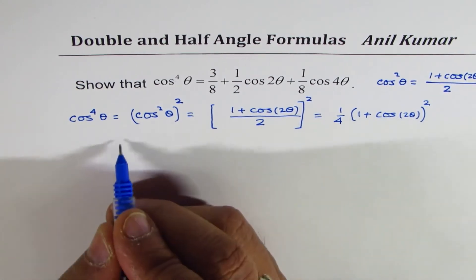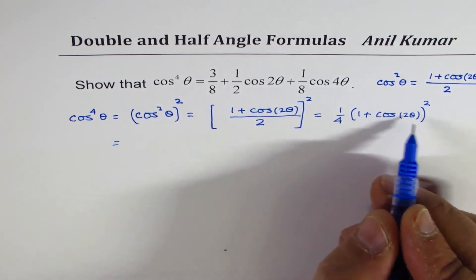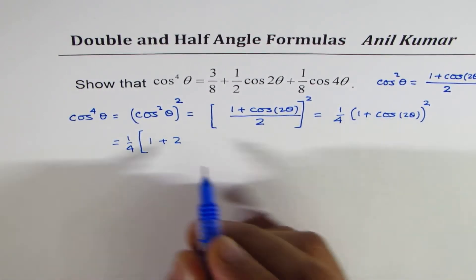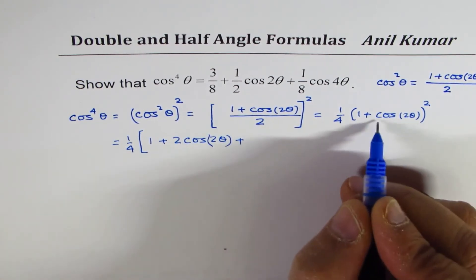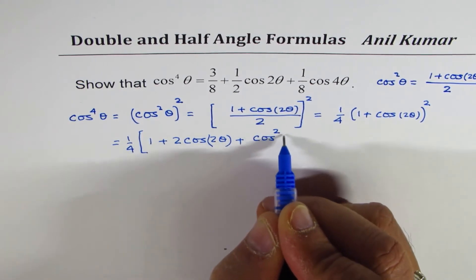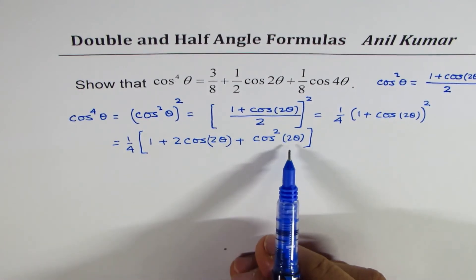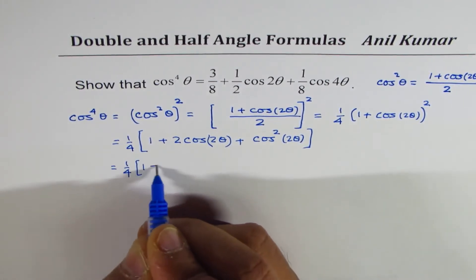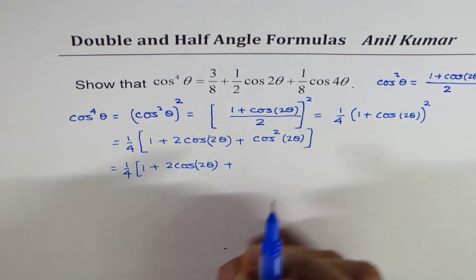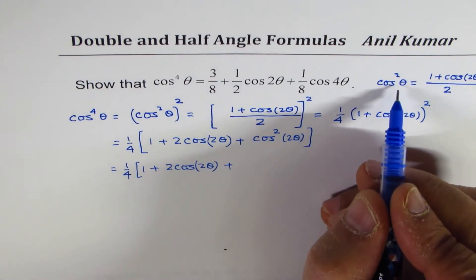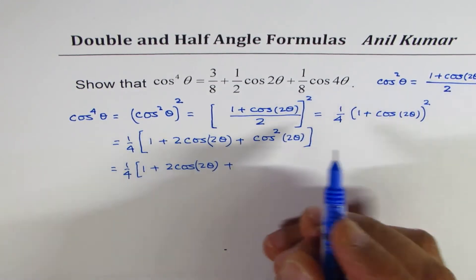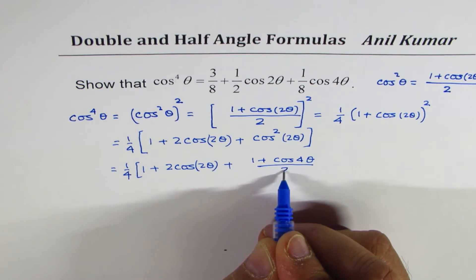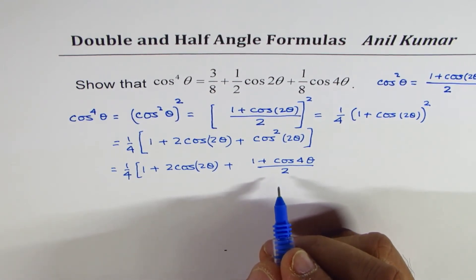Now we open this bracket. Using (a + b)² = a² + 2ab + b², we write this as 1 over 4 times: 1 squared, which is 1, plus 2 times cos 2 theta, plus cos squared 2 theta. Now instead of cos squared 2 theta, if I replace theta with 2 theta in our formula — that becomes 4 theta — I can write cos squared 2 theta as 1 plus cos 4 theta divided by 2.